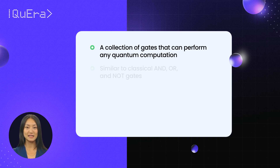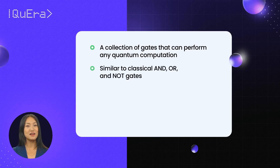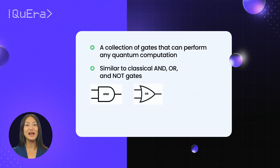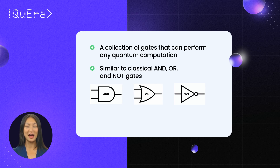This is much like classical computing, where a set of basic operations like AND, OR, and NOT allows all digital operations to be performed. Universal quantum gates are special because we can perform any quantum computation imaginable with just a few types.